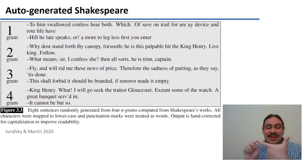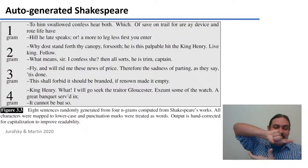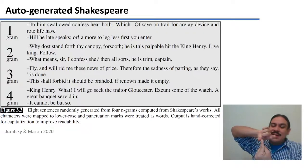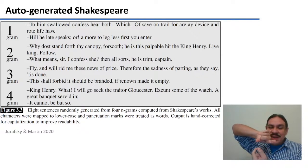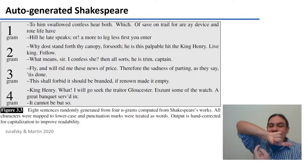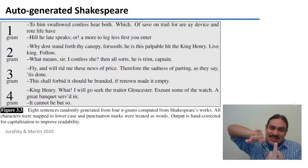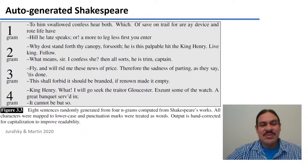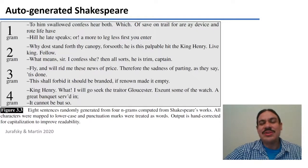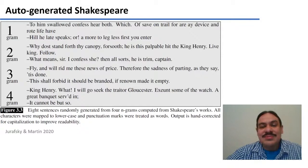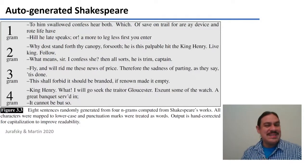A four-gram is pushing it. Because this would be one, two, three words, and then you choose the last three words as the first three words of the next four-gram. And then you take the last three words of that four-gram as the first three words of the next four-gram. And that's how you do the chaining. King Henry, what? I will go seek the traitor Gloucester. Exeunt sum of the watch. This sounds very much like English. We'll come back to the four-gram in a second.